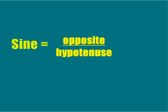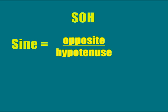You determine the sine of an angle by dividing the line opposite the angle by the hypotenuse of that triangle, thus giving you the SOH.